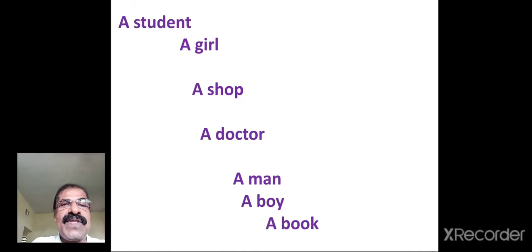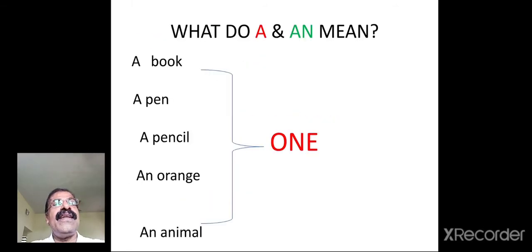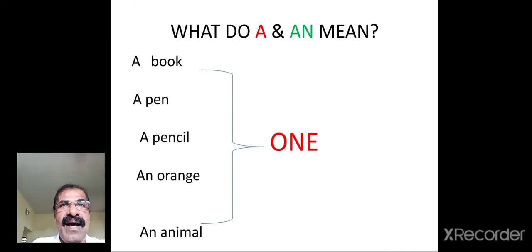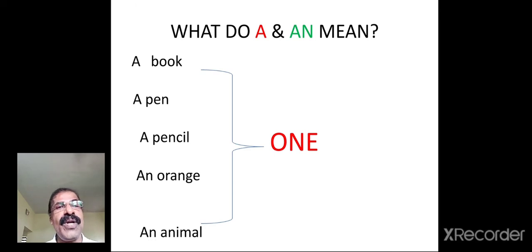So when you use the indefinite article 'a' or 'an' before a word, that word gets used in its general sense. Now, 'a' and 'an' are indefinite articles. These articles are called indefinite because when we make use of these articles, we don't talk about one specific, particular, or definite object or person. That's why these are called indefinite.